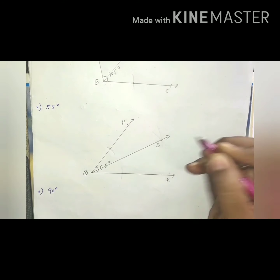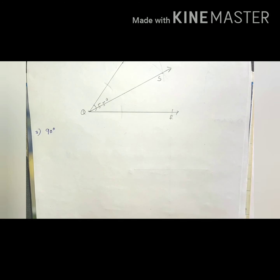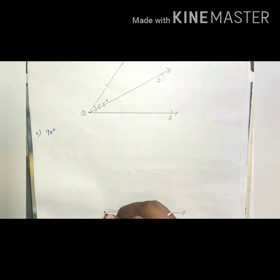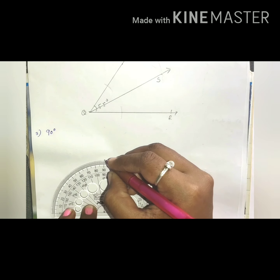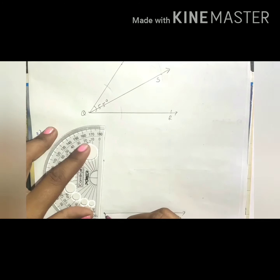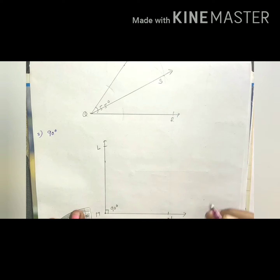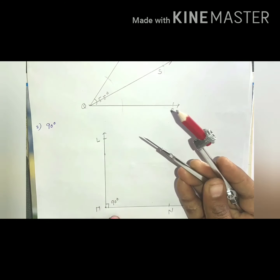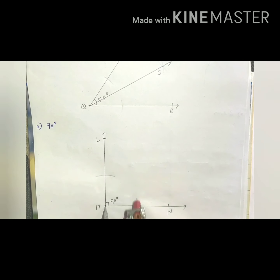The next question asks us to draw angles of the given measures and draw an angle bisector — we have to draw the angles and then bisect them. The first angle is 105 degrees. Make a line and draw an angle of 105 degrees.